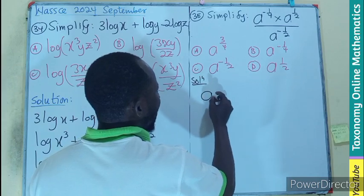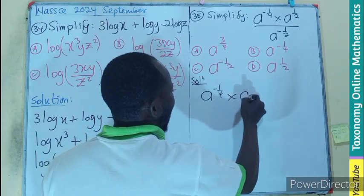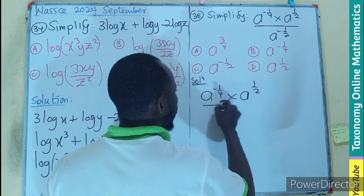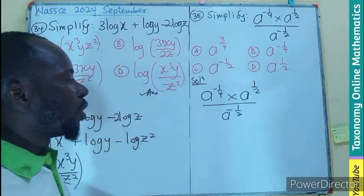We have a exponent negative one-half times a exponent one-half divided by a exponent negative one-half.